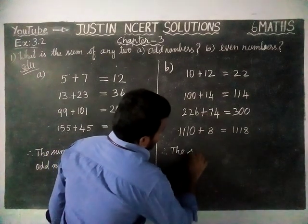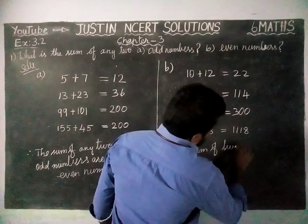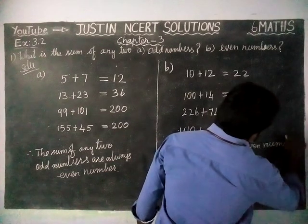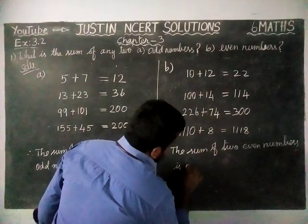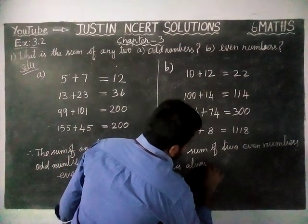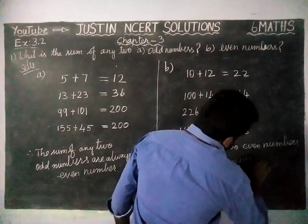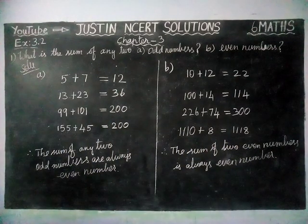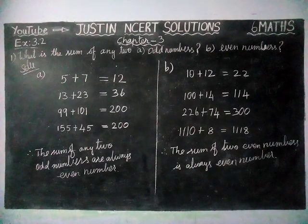Therefore, the sum of two even numbers is always an even number. So, if we are adding two odd numbers, or if we are adding two even numbers, we will get an even number only as an answer.